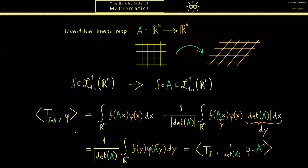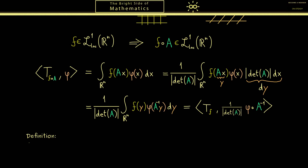In fact, this is exactly what we have to do for non-regular distributions. Hence let's put this into a definition. So this one works for each distribution T and linear map A. However, as before, A should be invertible.